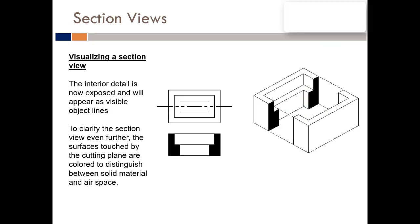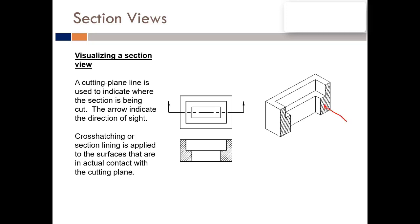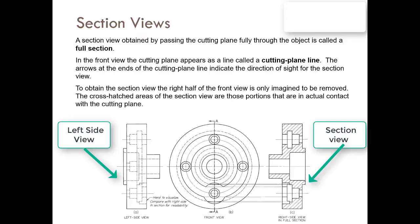Step one: add the cutting plane line. Step two: remove the part you don't need. Step three: you are now able to see the part from both sides. Remember that this part was hollow inside — it had a pocket. For the part that has been cut, add the section view. For the part that was empty, add nothing. The left side view shows the normal hidden line view, and the right side view shows the section view.